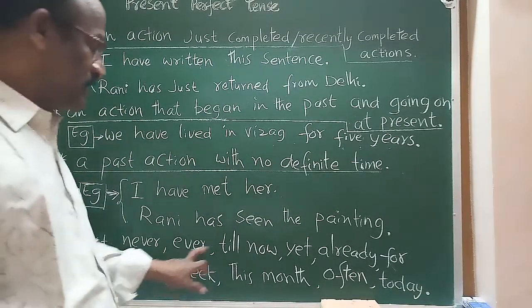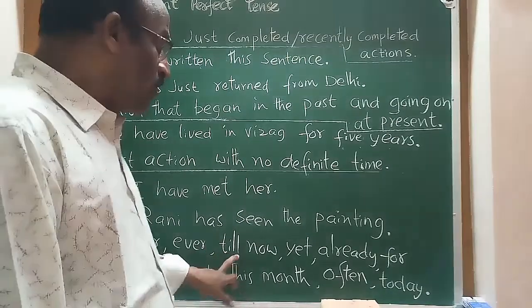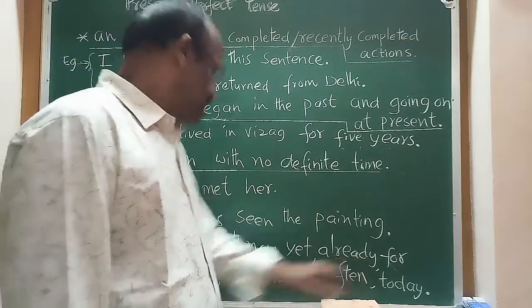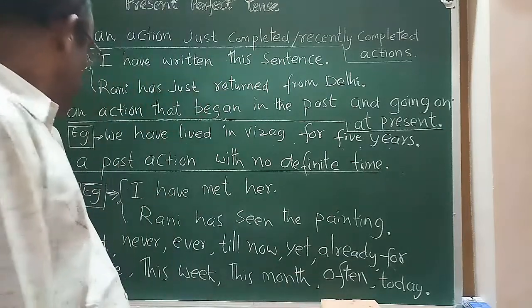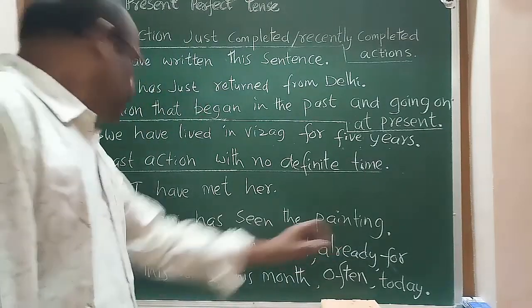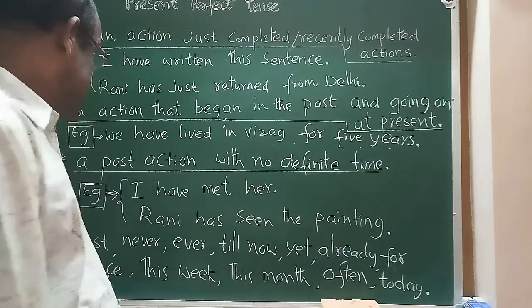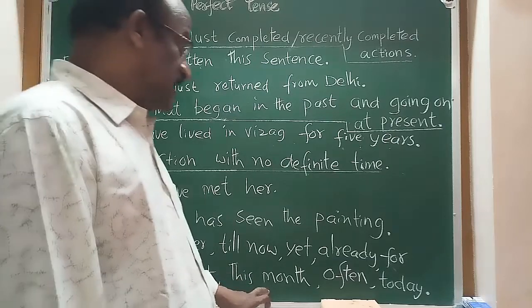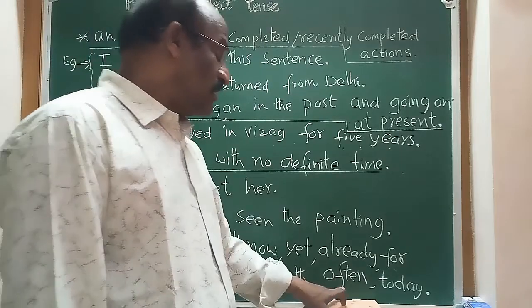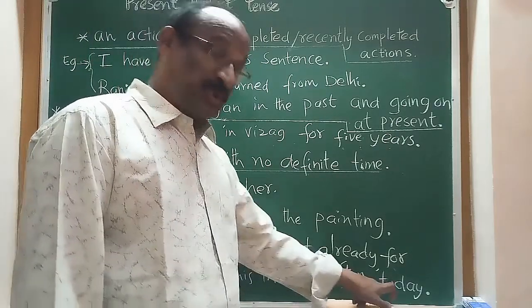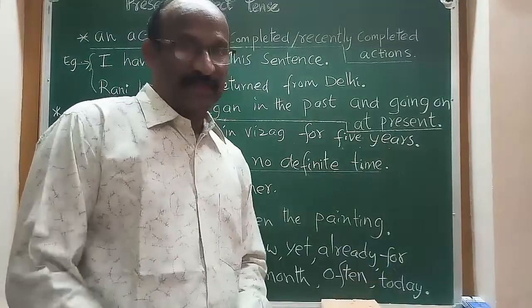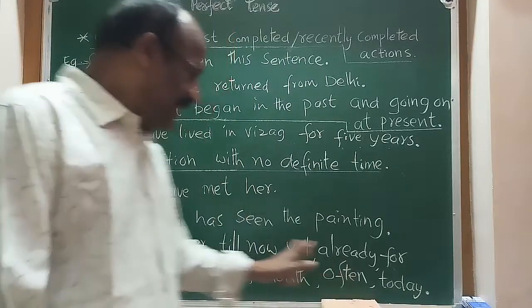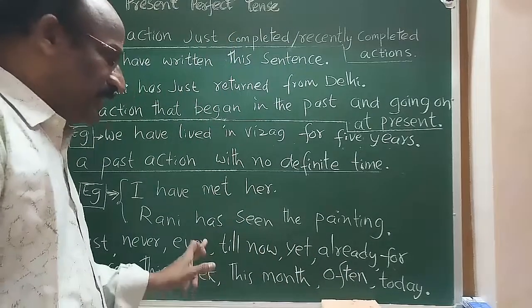Important keywords that signal present perfect tense: never, ever, till now, yet, already, for, since, this week, this month, often, today, just, even, recently.